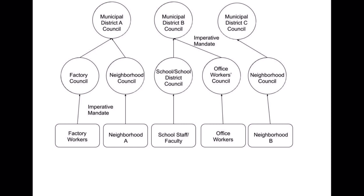We will now turn to yet another modification of the electoral process that will make vertical accountability in such a system even more streamlined. The above council system still has imperfections, though it is already more democratic than its liberal counterpart. Council democracy is far more direct than representative democracy, in which candidates for election are not required to follow through on any policy proposals. Moreover, representative democracies, as is often seen in the United States, present the voting public with a lesser of two evils dilemma that greatly limits social potential. How can council democracy be improved?